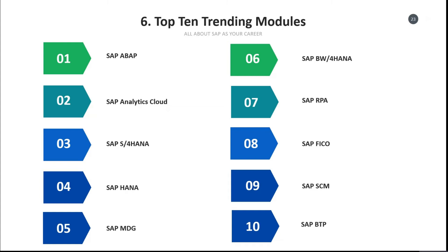SAP S4 HANA is a database module that has definitely shifted SAP's processing speed to a next level, because it uses an in-memory database management system — it processes everything in RAM.